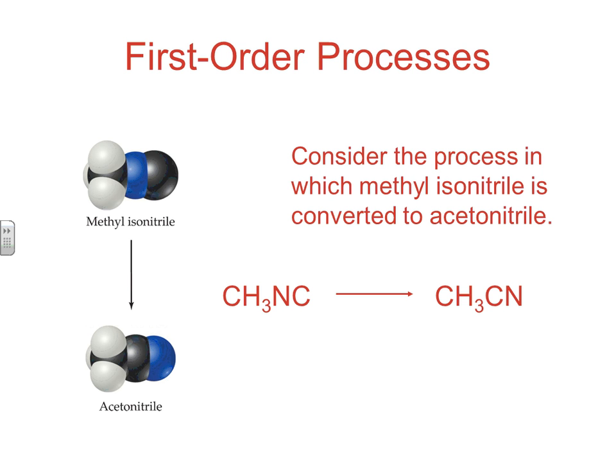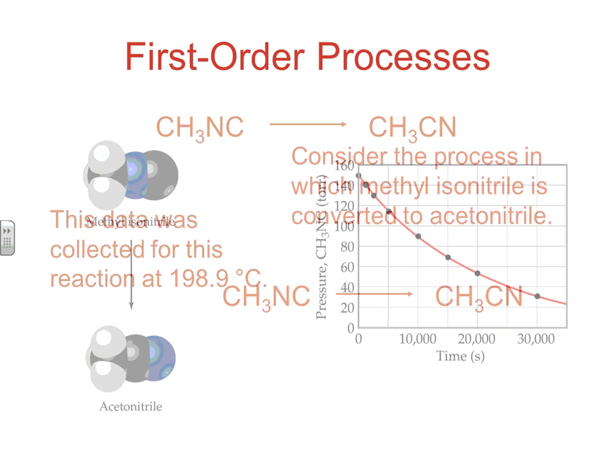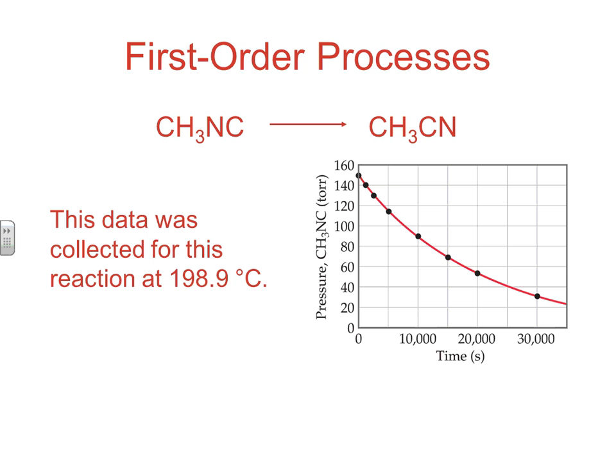Looking at a simple first order reaction — the conversion of methyl isonitrile into acetonitrile — it's a nice, simple first order process. When we graph concentration versus time, notice it's not linear. If it were linear, that would be our zero order process, which we'll talk about later. So at this point we haven't found our linear relationship, and we can rule out zero order since concentration versus time is not linear.